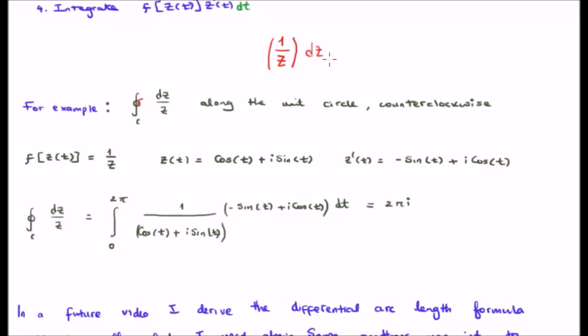We parameterize the unit circle by saying it's cos(t) plus i times sin(t) - that is a parameterized circle centered at the origin. We take the derivative of that with respect to t.